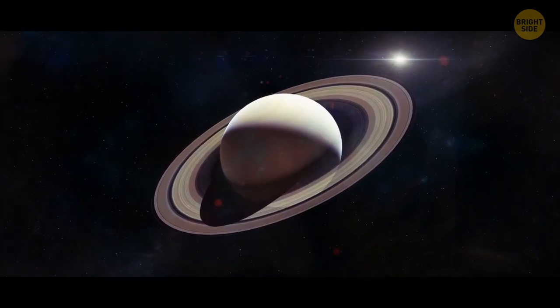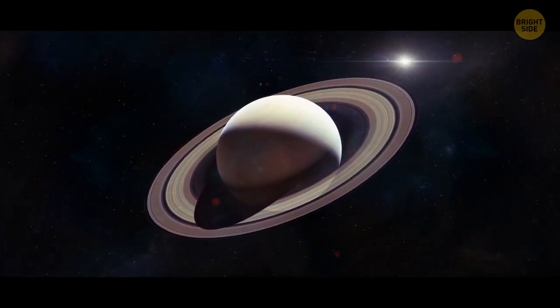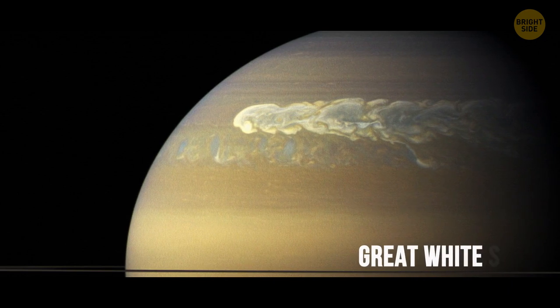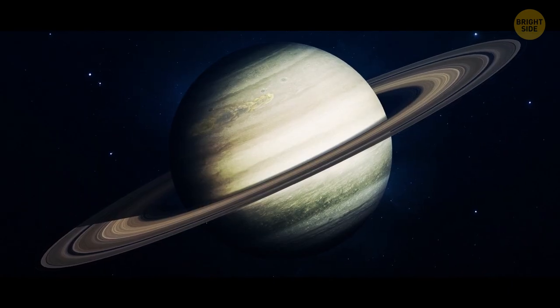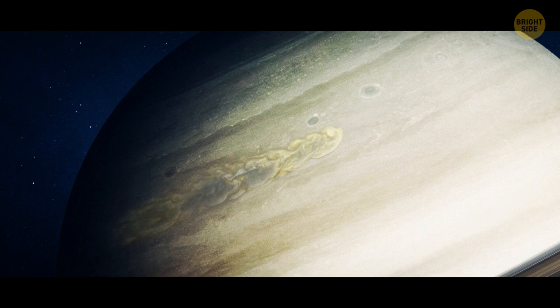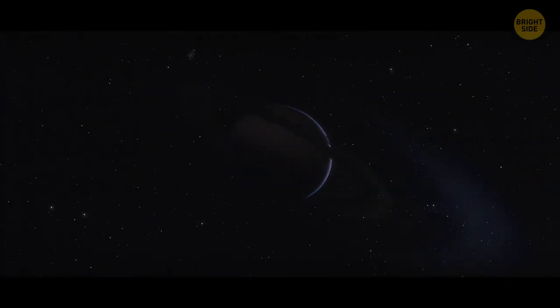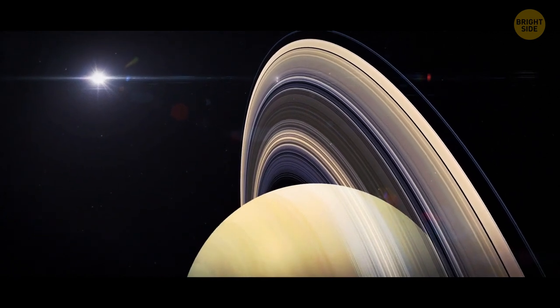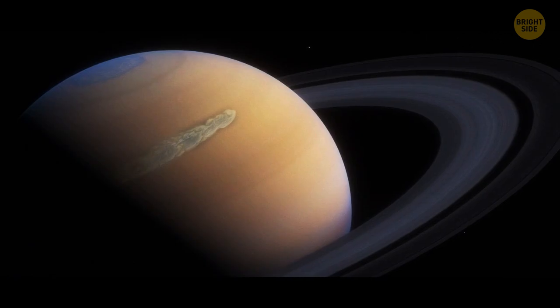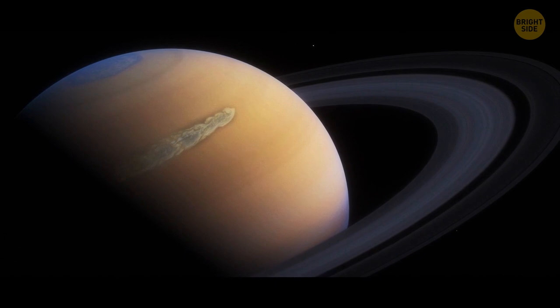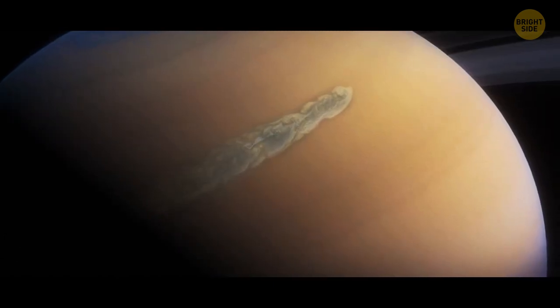A storm the size of our planet keeps raging on Saturn. It's called the Great White Spot. The storm has a tail of white clouds, and it encircles the entire planet. The storm occurs every 30 years or so, when Saturn's northern hemisphere tilts toward the Sun. At first, the storm is indeed just a spot. And then, it starts stretching in length.